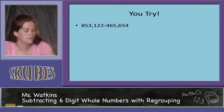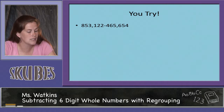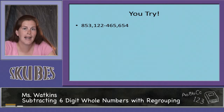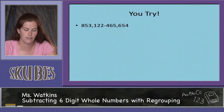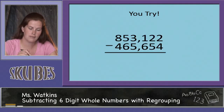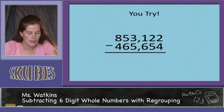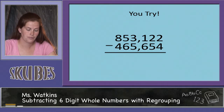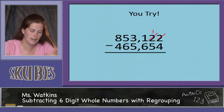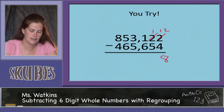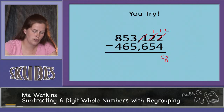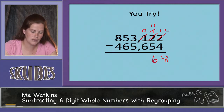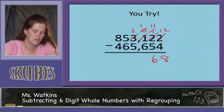Let's try one final problem: 853,122 minus 465,654. I've got them stacked here for you. Starting with our ones column, we need to regroup: this 2 becomes a 1 and this 2 becomes a 12. 12 minus 4 equals 8. We need to regroup again: this 1 becomes a 0 and this 1 becomes an 11. 11 minus 5 equals 6. Let's regroup again: this 3 becomes a 2 and this 0 becomes a 10. 10 minus 6 equals 4.